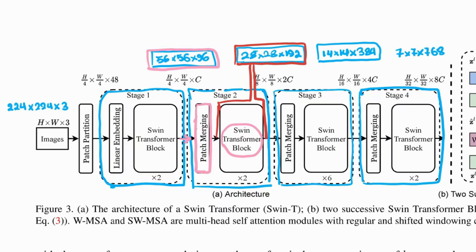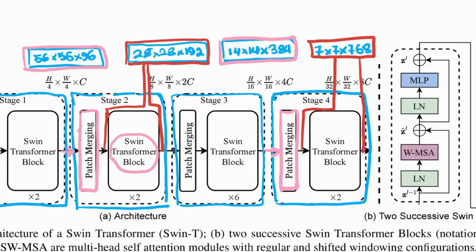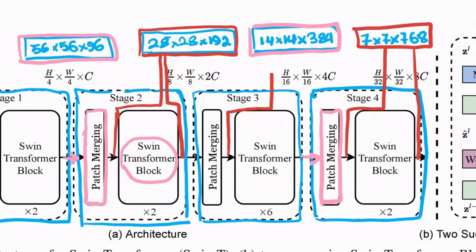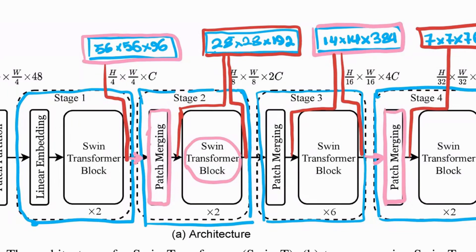Consider stage four: the input from the previous stage is 14×14×384. After patch merging, the output is 7×7×768, which is similar to the output of the Swin Transformer block in stage four. For stage three, the input and output of the Swin Transformer block are also the same size. For stage one, both are 56×56×96.